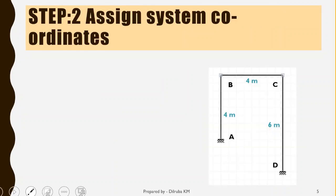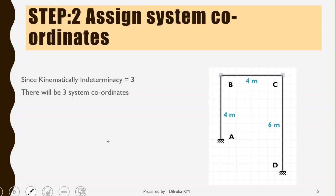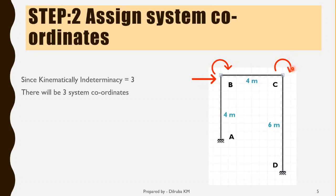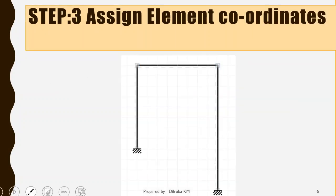The second step is to assign system coordinates. Since we have three kinematic indeterminacies, the number of system coordinates will also be 3. We will assign three system coordinates at B and C. The first system coordinate is a displacement at B, the second is rotation at B, and the third system coordinate is rotation at C. So we have three degrees of freedom: 1, 2, and 3 at B and C.